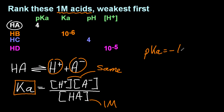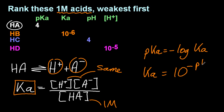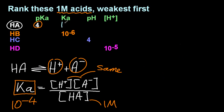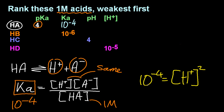pKa is the negative log of Ka, but I need Ka, and that's 10 to the minus pKa. So Ka is 10 to the minus 4. Since H+ and A- are the same, that gives H+ squared. Solving for H+, we get 10 to the minus 2, and so the pH is 2.